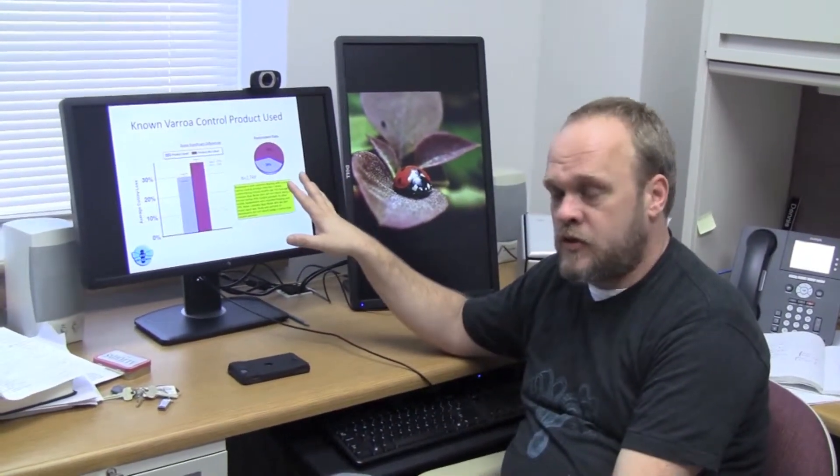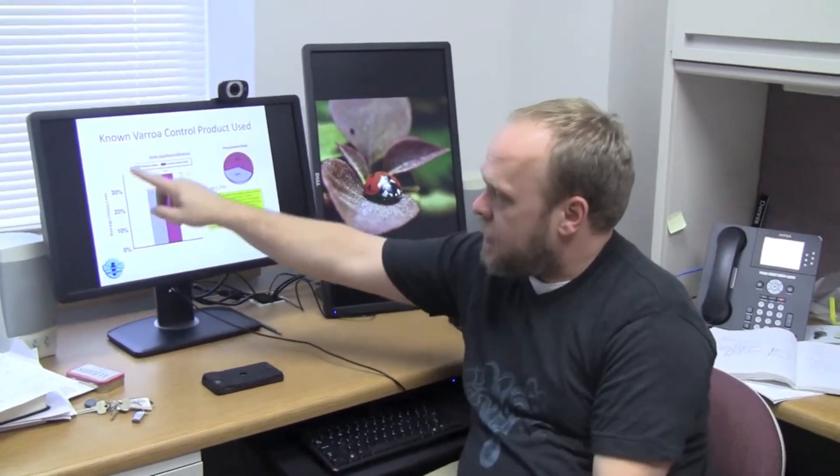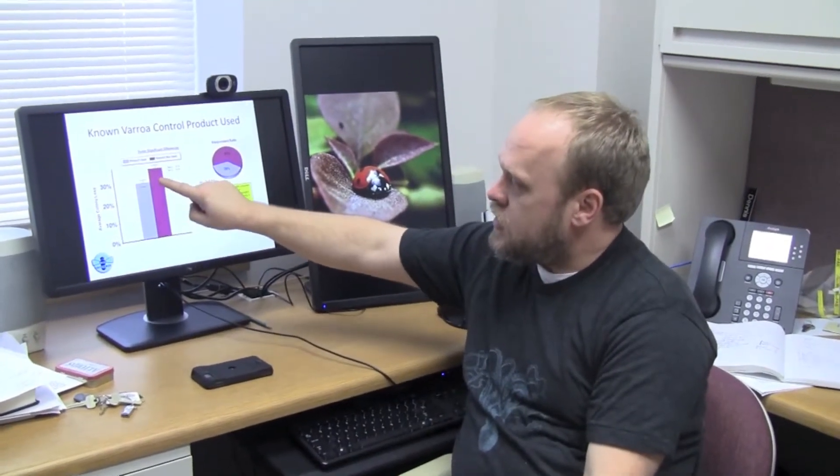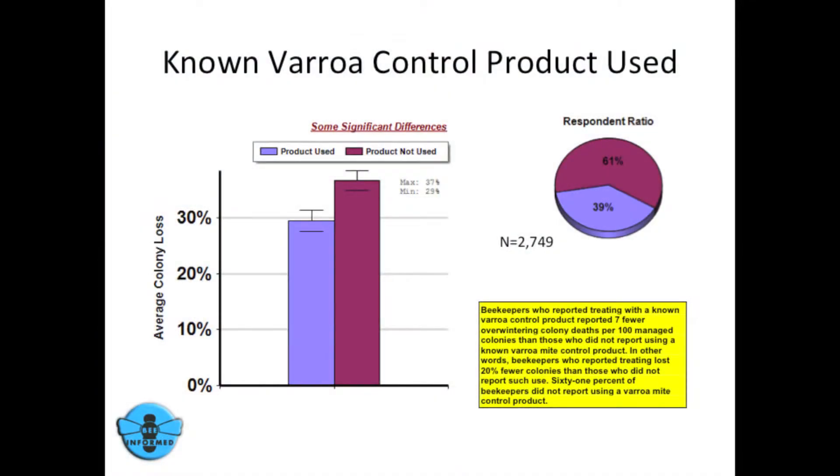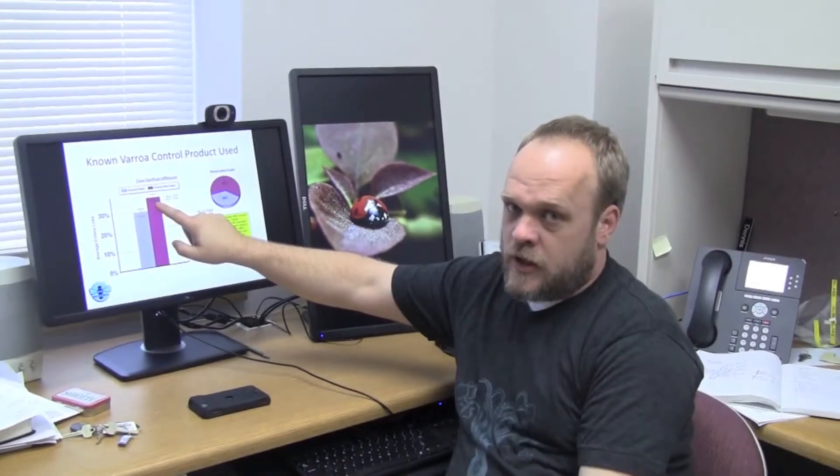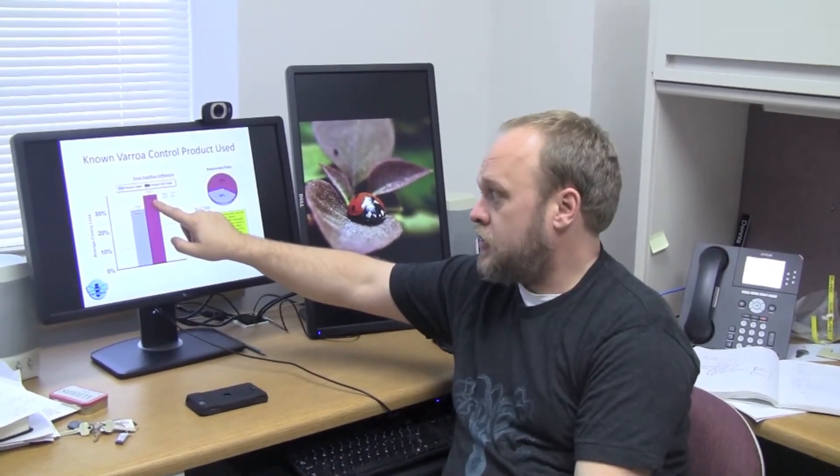So very briefly, this is a report on known Varroa mite control product use, and if we look at this graph here we can see a couple things. First, there are these two averages, and that's the average loss suffered by those people who used a Varroa mite control product and those who did not use a Varroa mite control product in the 12 months preceding the survey.